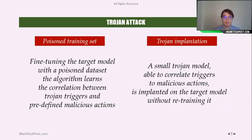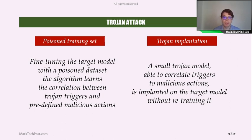In this paper, the researchers show two ways of doing a trojan attack: the poison training set approach and the trojan implantation approach. In the poison training set approach, the malicious developer takes the target model and retrains it on a poisoned dataset in which some inputs are modified with malicious triggers.